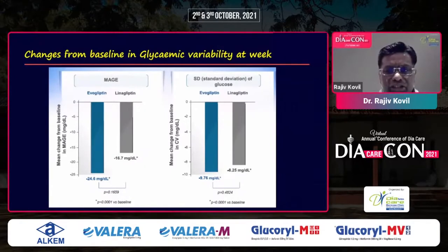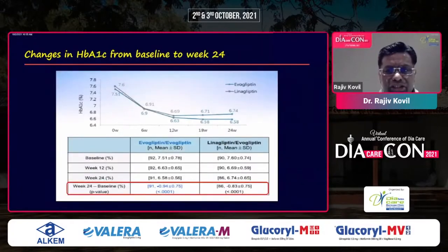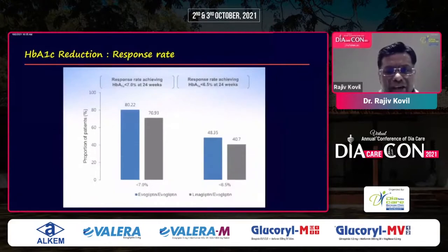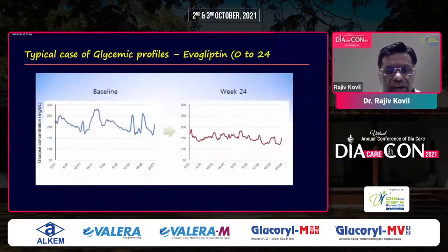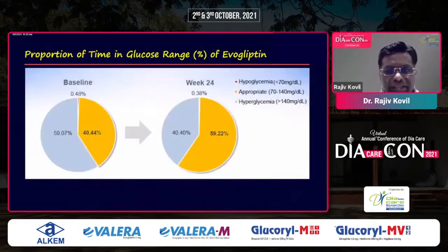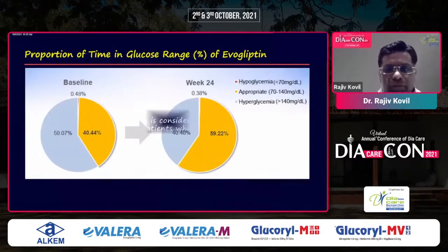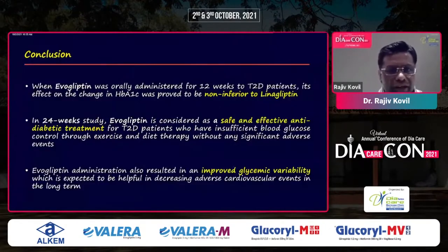At 24 weeks, mean amplitude of glycemic excursion and standard deviation were better with evogliptin compared to linagliptin. More patients had better and more durable control with evogliptin. The response rate was higher with evogliptin. Looking at glycemic variability and time in range, evogliptin had more patients in TIR compared to linagliptin. Conclusion: evogliptin was safe, effective, improved glycemic variability, and was non-inferior to linagliptin.